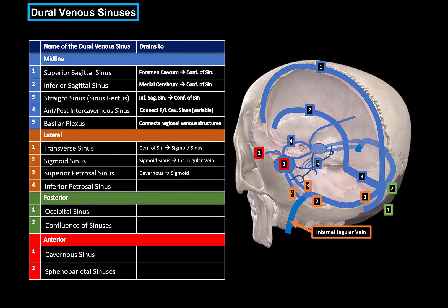The superior and inferior petrosal sinuses drain the cavernous sinus into the sigmoid sinus and the internal jugular vein. The occipital sinus is the smallest sinus and connects with the confluence of sinuses and the sigmoid sinus. The confluence of sinuses is not really a structure in itself — it's simply the connecting point where the superior sagittal sinus, the straight sinus, and the occipital sinus meet.